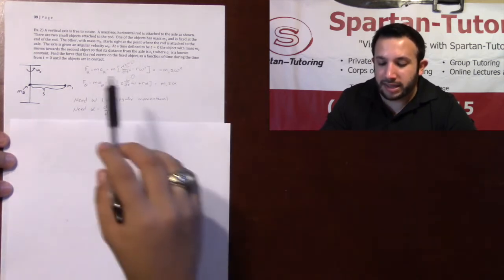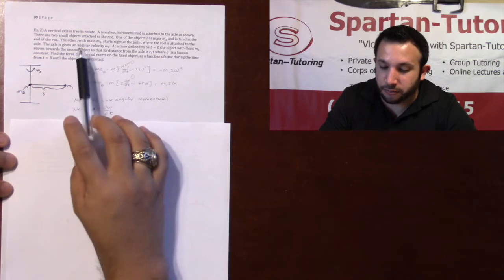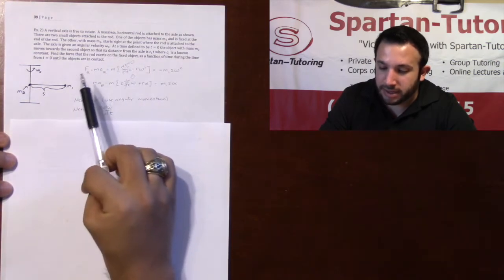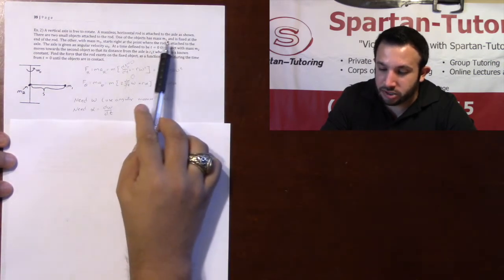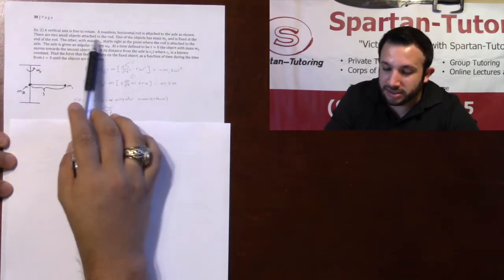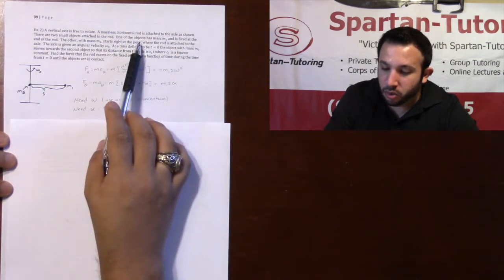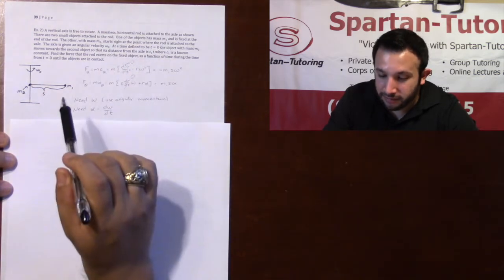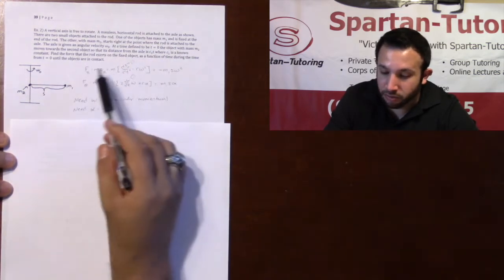Taking a look at number 2, it says that a vertical axis is free to rotate. A massless horizontal rod is attached to the axle as shown. There are two small objects attached to the rod. One of the objects is a mass m1 and is fixed at the end of the rod.